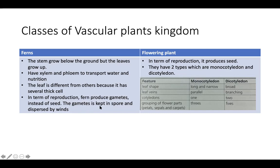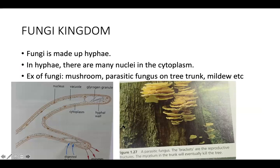The next class is flowering plants. In terms of reproduction, flowering plants produce seeds. They have two types: monocotyledon and dicotyledon. You may have studied this in Form One or Standard Six. It is straightforward information.